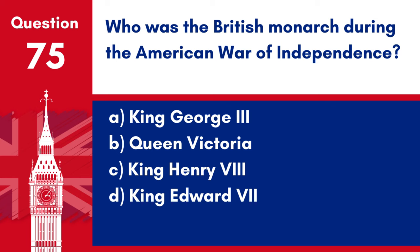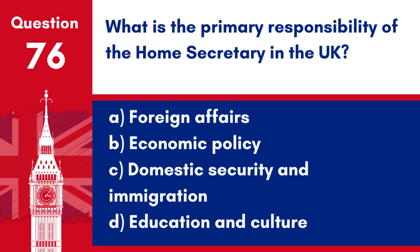Question 75. Who was the British monarch during the American War of Independence? a. King George the Third. b. Queen Victoria. c. King Henry the Eighth. d. King Edward the Seventh. Answer: a. King George the Third. King George the Third was the British monarch during the American War of Independence, which lasted from 1775 to 1783.